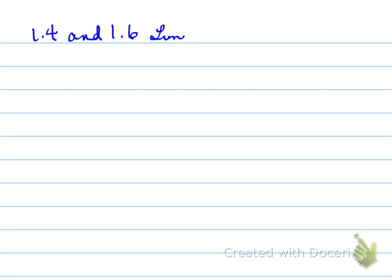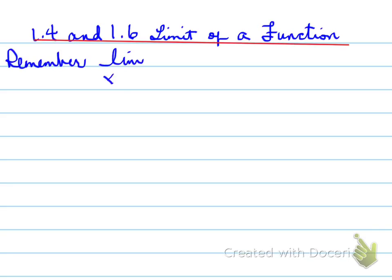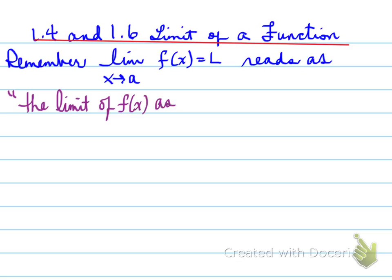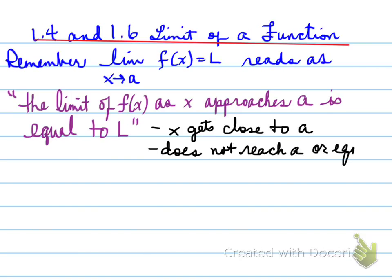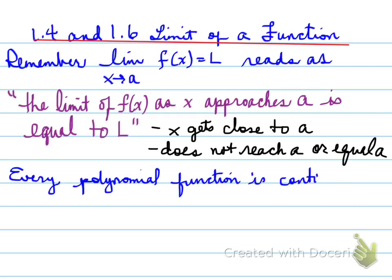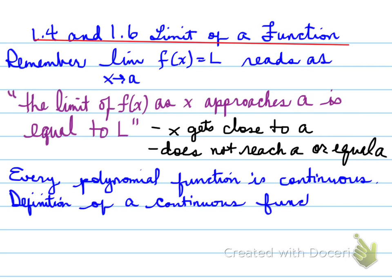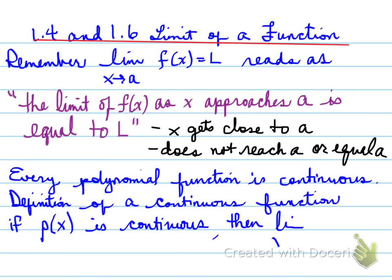Sections 1.4 and 1.6: the limit of a function. The limit as x approaches a of f(x) equals L means that as x gets closer to a — it does not reach or equal a, but gets close enough that the answer is essentially the value of f at a. Every polynomial function is considered continuous. If p(x) is continuous, then the limit as x approaches a of p(x) equals p(a). That is why we substitute a into most of the equations we see.